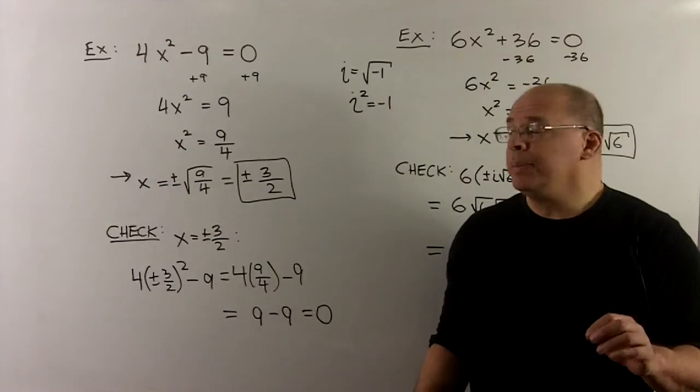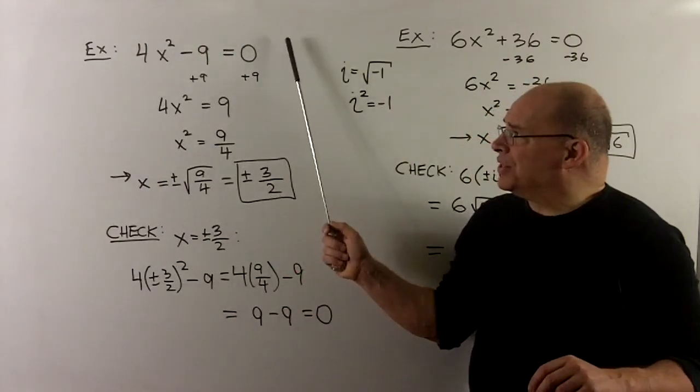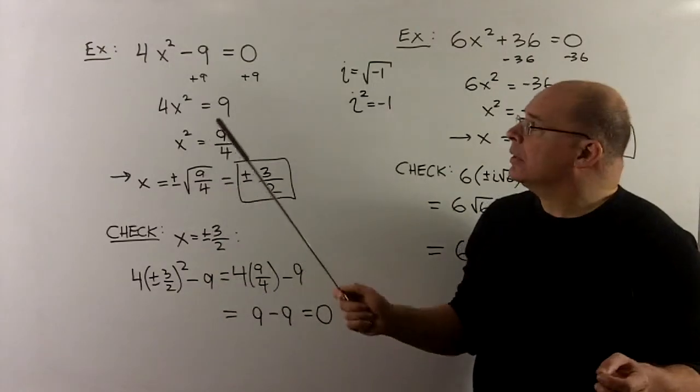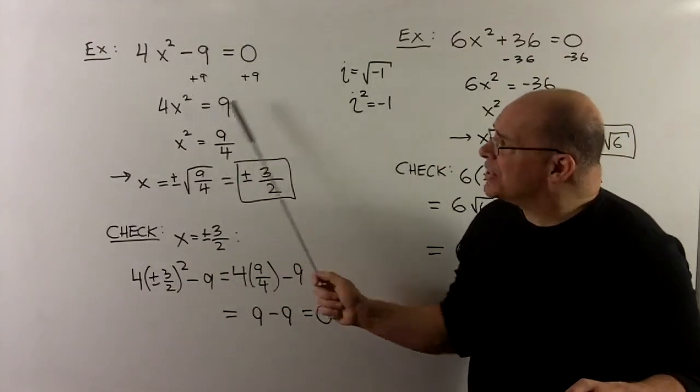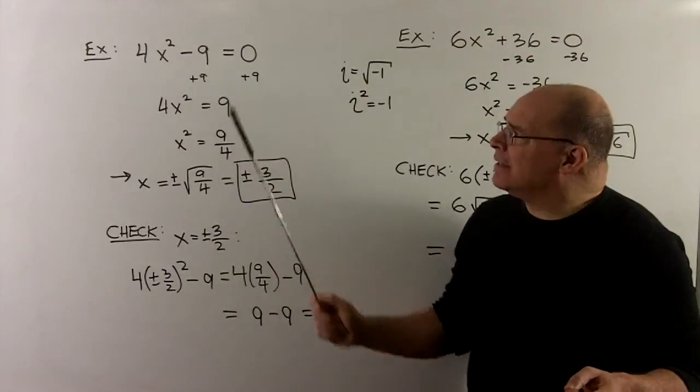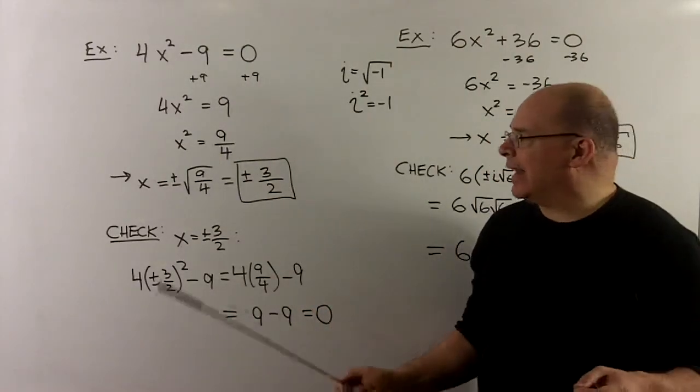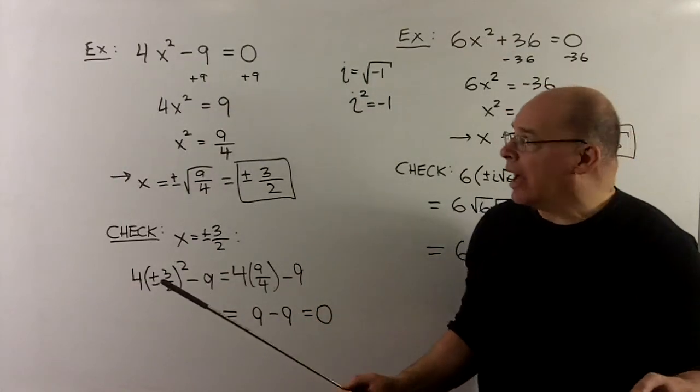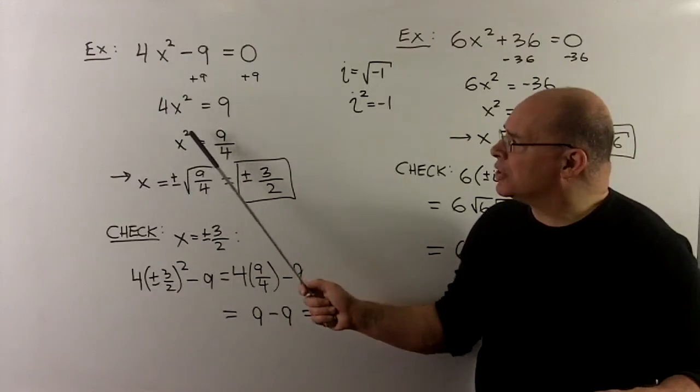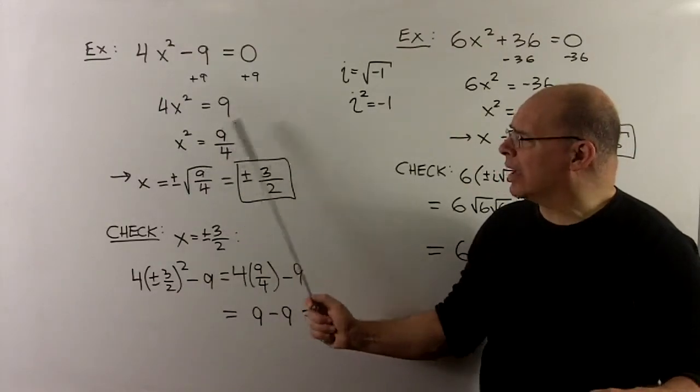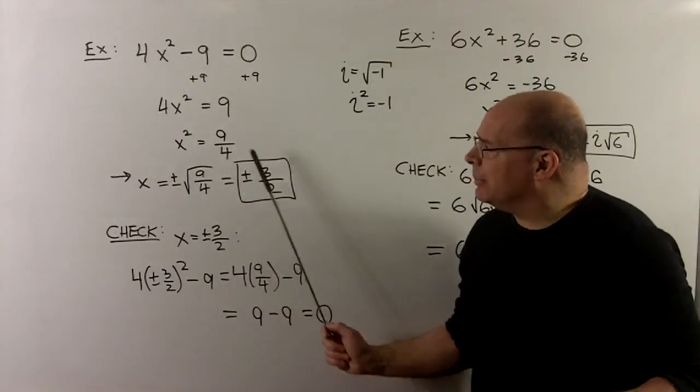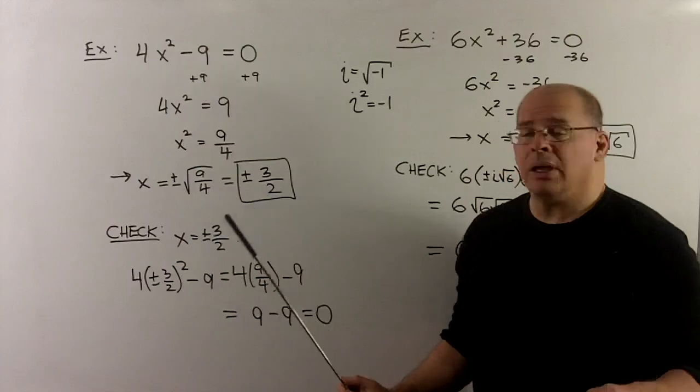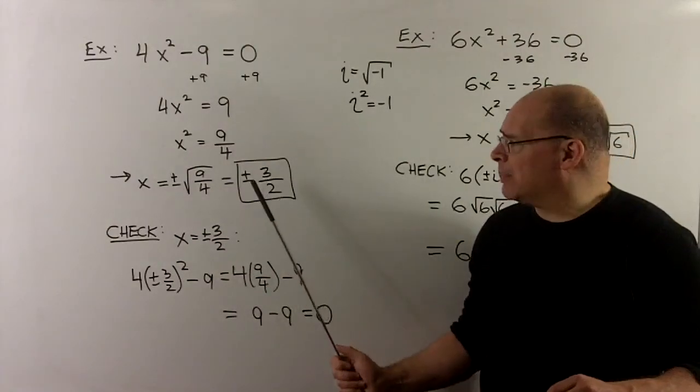Next example, let's try 4x squared minus 9 equal to 0. We're still trying to isolate the x squared. So we'll add 9 to both sides, get 4x squared equal to 9. Then I can divide both sides by 4. So we get x squared equals 9 over 4. We can apply the square root property now. So to take away the square, I just put plus minus square root on the other side. That's going to clean up nicely. The square root of 9 over 4 is just 3 over 2. So our answer for x is plus minus 3 over 2.